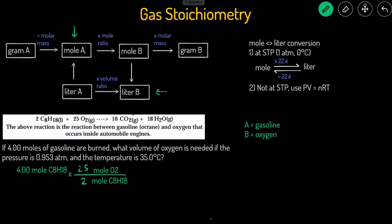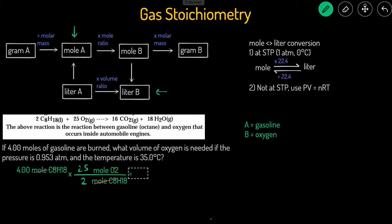We've completed the first step — going from moles of A to moles of B. Now we need to convert moles of B to liters of B. Let's cross out units: we currently have moles of O₂. Since we're not at STP, we have to stop the dimensional analysis here and use the ideal gas law. So: 4 × 25 ÷ 2 = 50 moles of O₂.